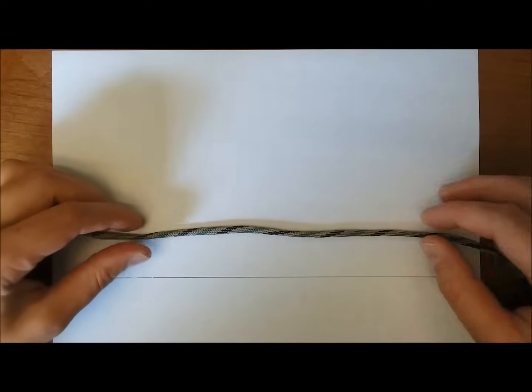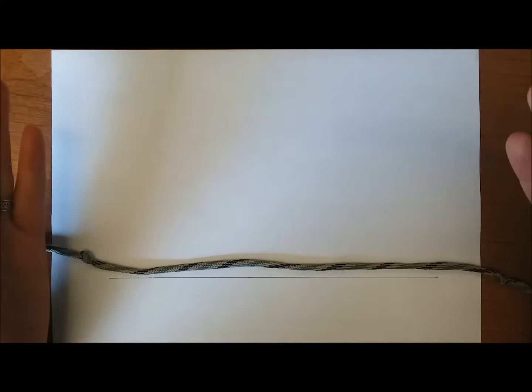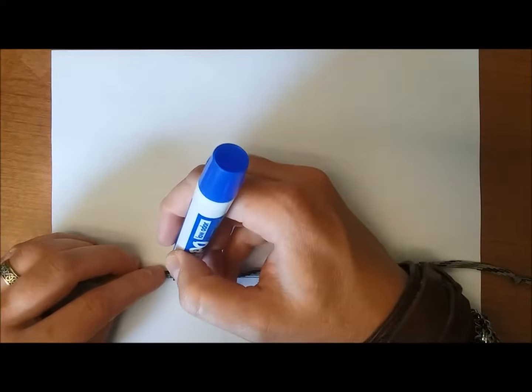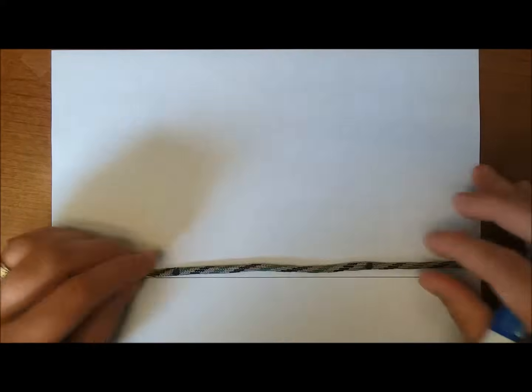I'm going to take a piece of string. The first thing we're going to do is mark the width of the arch. So this would be the distance between your columns in the cathedral, for example. So we're just going to mark two points and make our arch that wide.